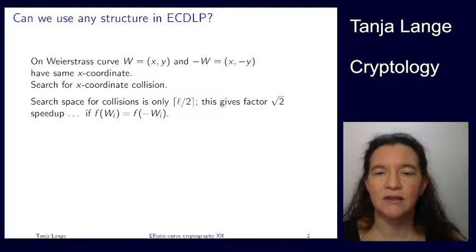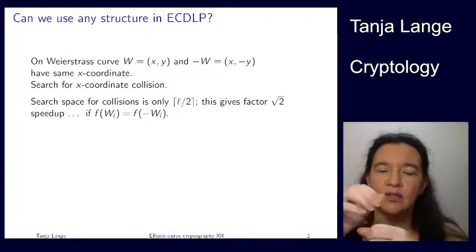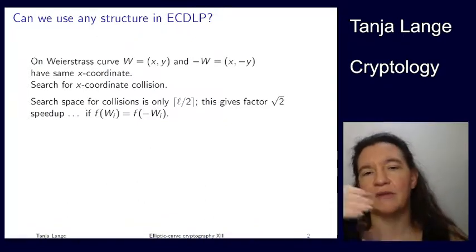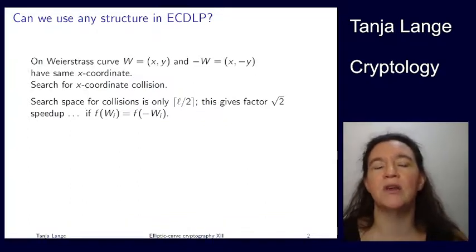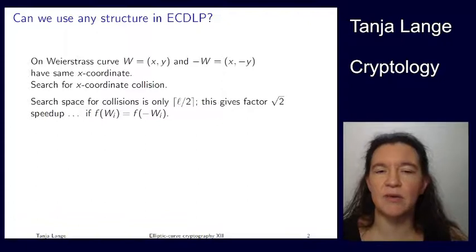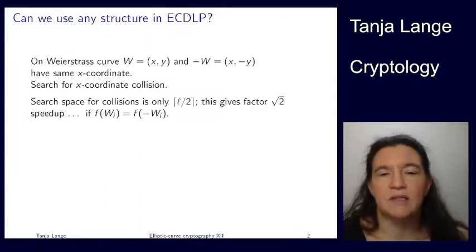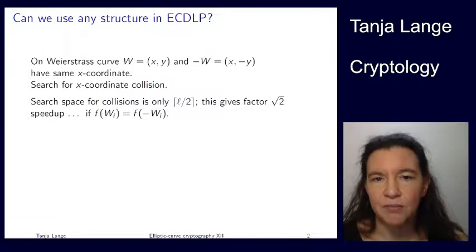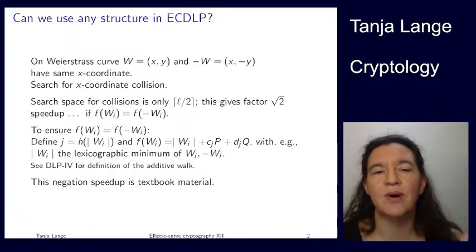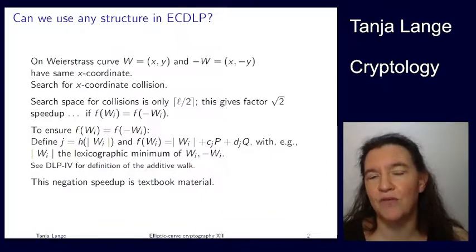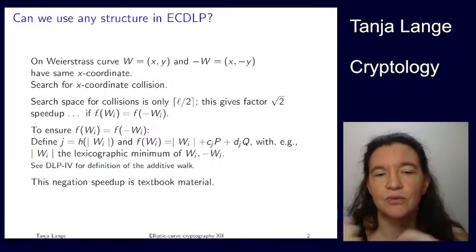Of course, that means that our walk has to be compatible. We're now identifying two points. So the next point, W_i going to W_{i+1}, it shouldn't matter whether we are at plus W or at minus W. So the walk function has to be such that the next step, W_{i+1}, is the same no matter which one we came from. That doesn't seem so hard to do. We just do basically, taking the point and defining some form of, well, lexicographic minimum would be the typical thing. So you're picking an absolute value of this point, either picking W or minus W. And if you can solve the discrete log problem for one, you also can solve it for the other one.